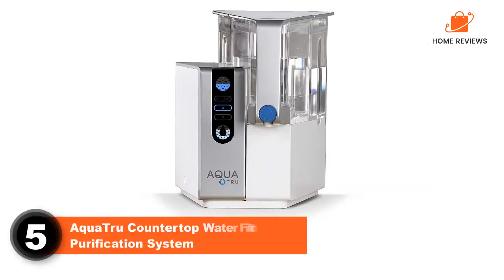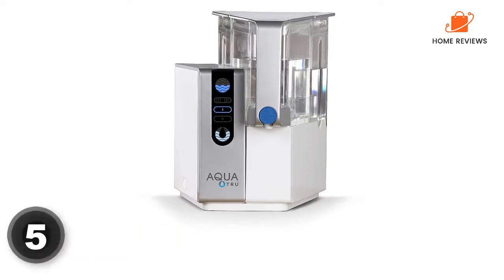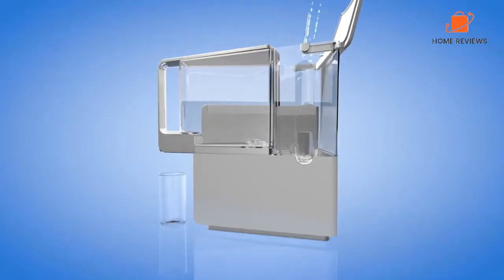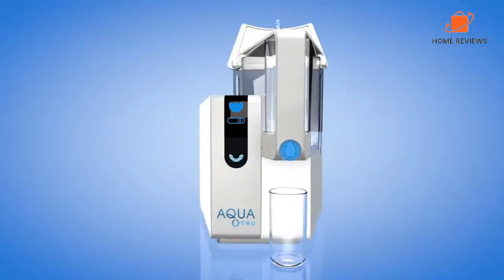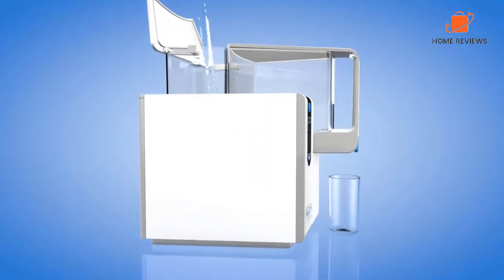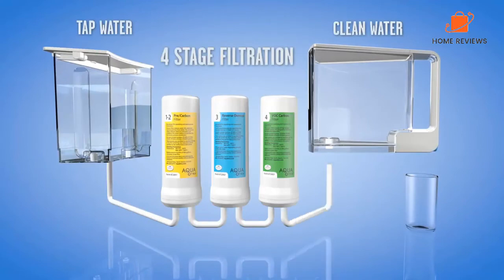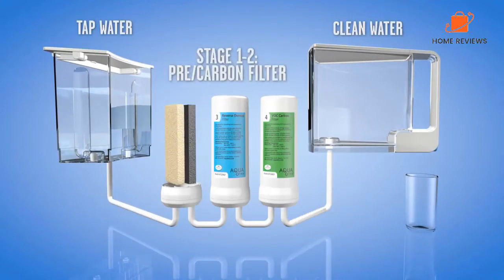Number 5: AquaTrue Countertop Water Filtration Purification System. For a reverse osmosis system with no plumbing or installation requirements, check out a countertop purification system. AquaTrue is a popular choice for renters or if you want to purify water without taking up space under the sink. The 18 by 18 by 15-inch unit sits on the counter and plugs into a standard household outlet.